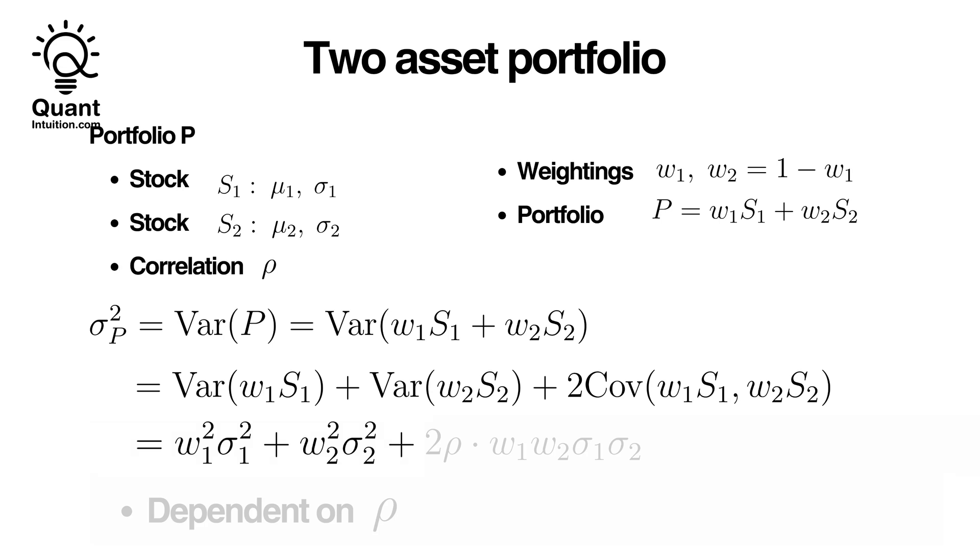When calculating, the weights W1 and W2 are squared and brought to the forefront. By definition, the covariance equals the correlation rho multiplied by the product of the two standard deviations. This last term incorporates rho, highlighting the dependency between the stocks. Unlike the linear relationship with W1 for the expected value, the variance's relationship with W1 is quadratic.